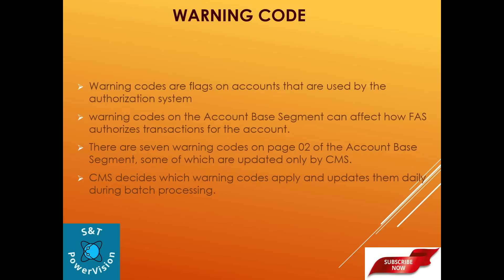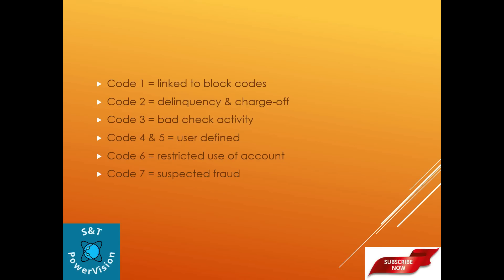After the letter code, we have warning codes. Warning codes are flags on an account used by the authorization system. Warning codes on the account base segment can affect how CMS authorizes transactions for the account. There are 27 warning codes on page 02 of the account base segment, some of which are updated only by CMS during daily batch processing. The warning codes are: Code 1 linked to block codes, Code 2 for delinquency and charge-off, Code 3 for bad check activity, Codes 4 and 5 are user-defined, Code 6 for restricted use of account, and Code 7 for suspected fraud.